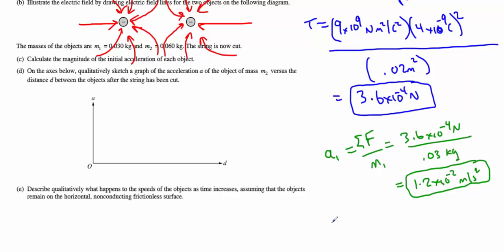The second particle will have the same formula, but the only difference is the mass. So it will be the same force up top. We're just going to use M2 now. So 3.6 times 10 to the negative 4 Newtons. We're going to divide that now by 0.06 kilograms. It's twice as massive, so we should get a value that's half as great in acceleration. We do. 6 times 10 to the negative 3 meters per second squared.